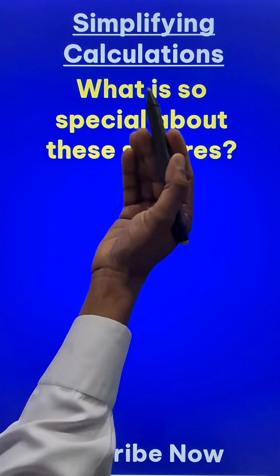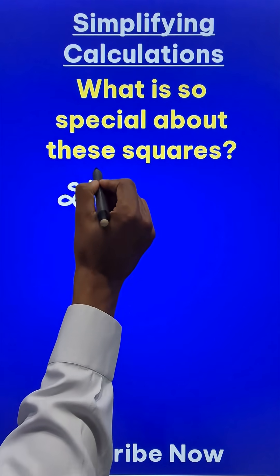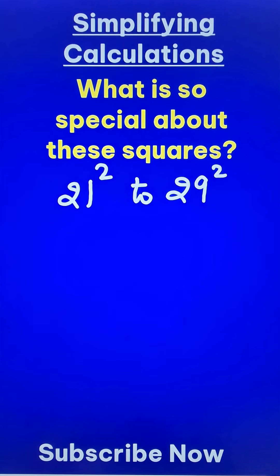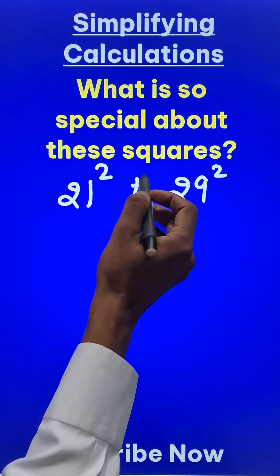Do you know that there is something very special about the numbers from 21 square to 29 square? Have you studied the pattern and observed this particular thing? Let me show you.